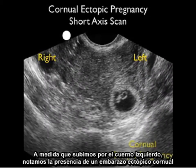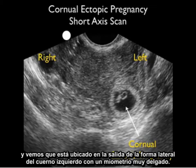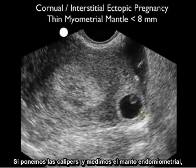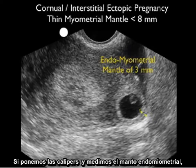As we go up the left cornua, we notice the presence of a corneal ectopic pregnancy. We see that it's located off to the side, way out to the left cornua, with a very thin myometrial mantle. If we actually put the calipers down and measure the endomyometrial mantle,